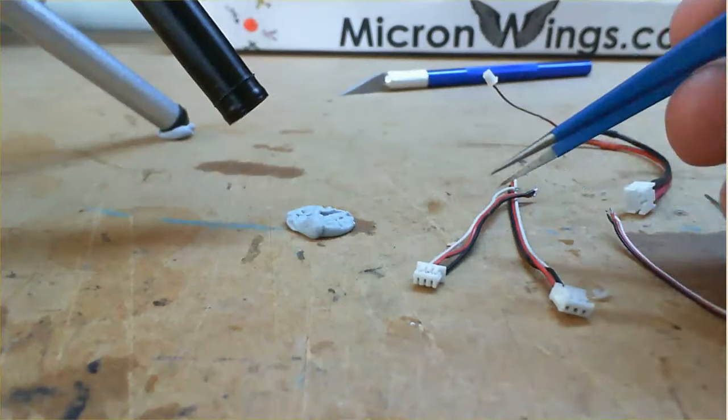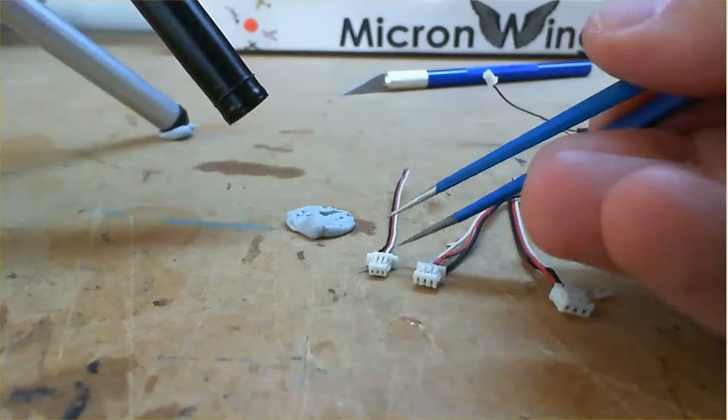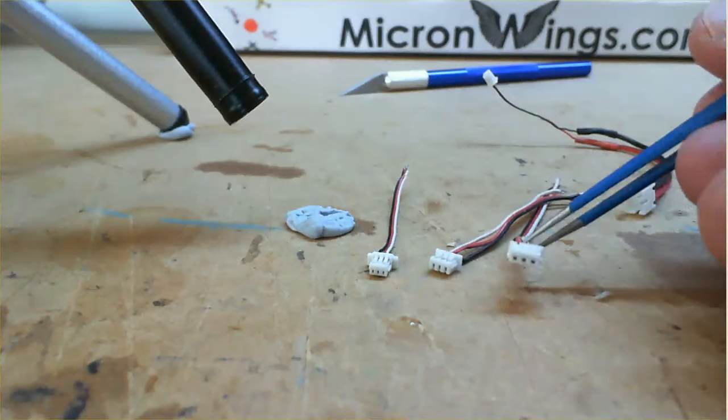OK, we're just going to have a look at reordering the wires in micro-RC connectors. There's a couple of different types: the JSTSH, the Molex, and the JSTZH.